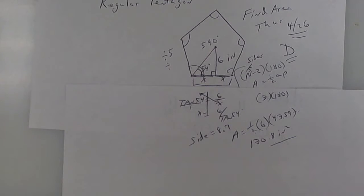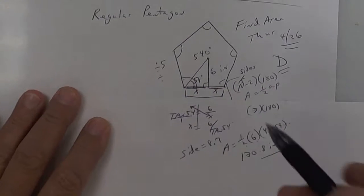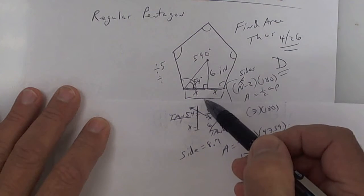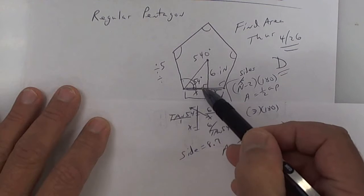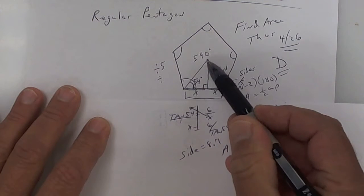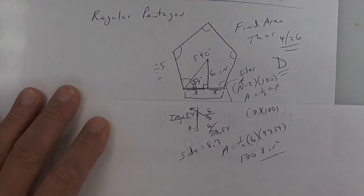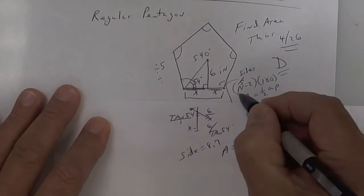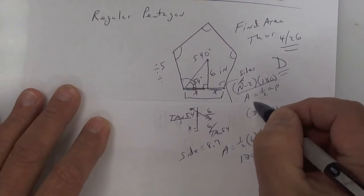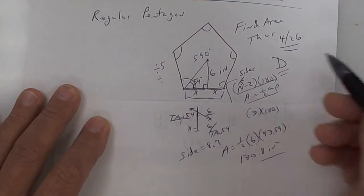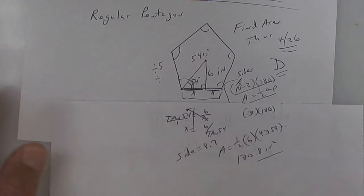Sometimes they give you the apothem. Sometimes they give you the side, and then you cut it in half to get x. Sometimes they give you the radius. But in any event, you have to use both formulas.